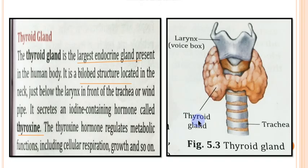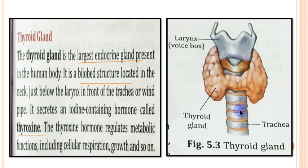Let us discuss the thyroid gland. The thyroid gland is the largest endocrine gland. It is present below the larynx — the larynx is known as the voice box — and in front of the trachea in the neck region.